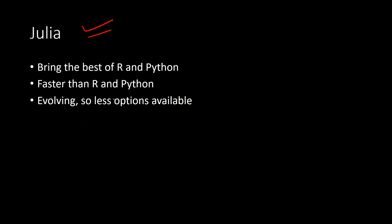Julia is a fairly new programming language compared to Python and R. It brings the best of both worlds — R is statistical software with lots of statistical packages, whereas Python is a general-purpose language. In Julia you can do both. It's also faster than R and Python, which is another advantage. Julia is also open source, so you can download it freely.